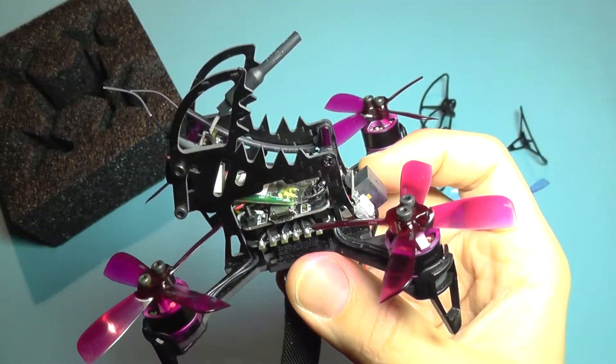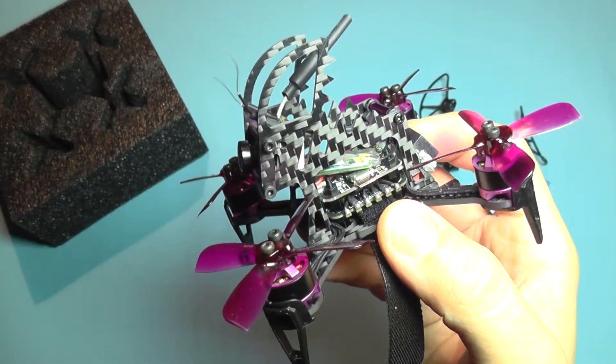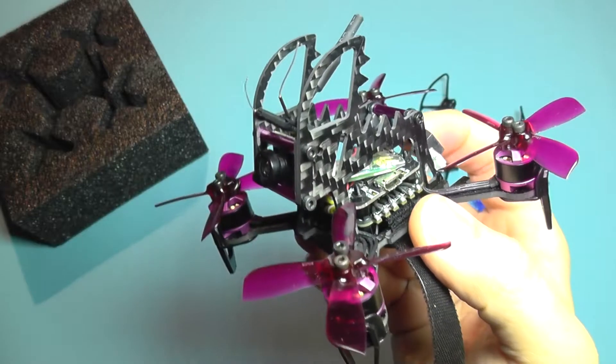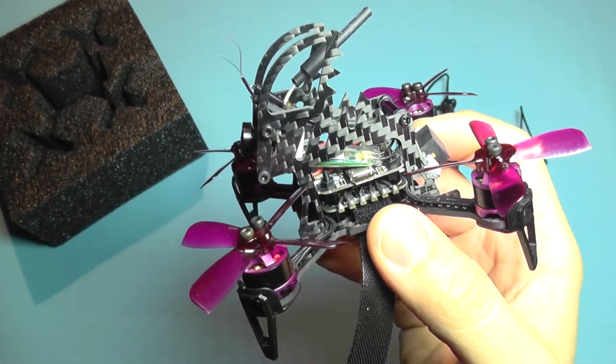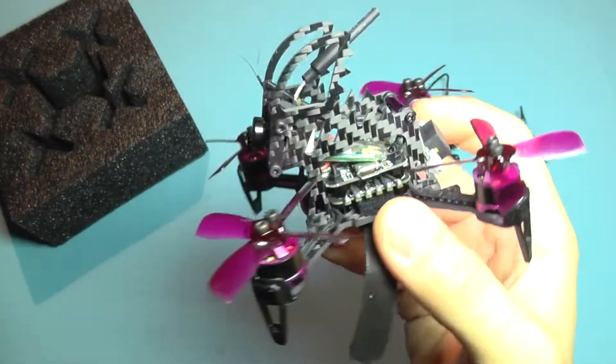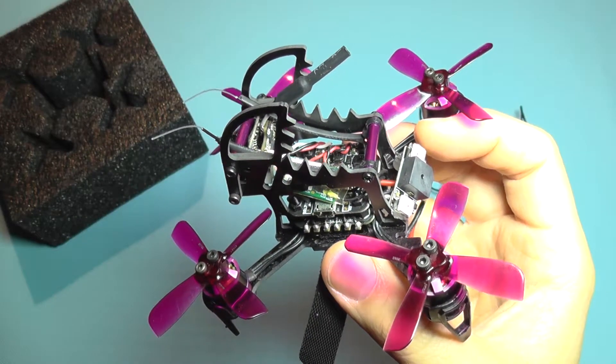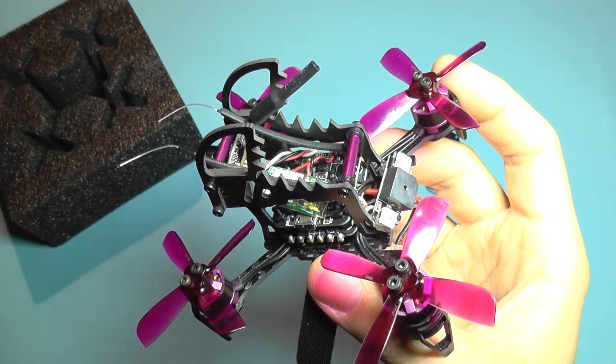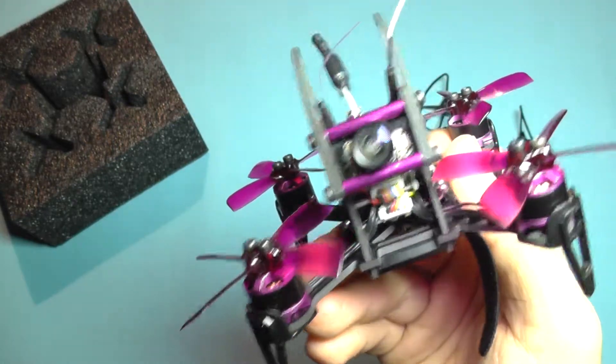It runs of course DSHOT, it has BLHeli support and can go up to 20 amps. Each integrated ESC has 20 amps rating. It should also support OSD. It's an F3 flight controller and also has a 700 TV line FPV camera.